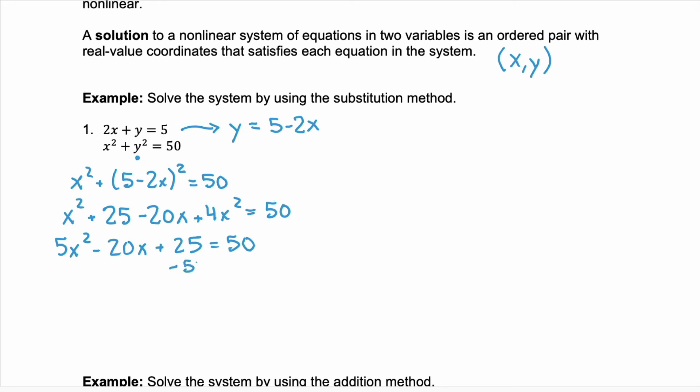Combine all of the like terms on the left-hand side and you have 5x squared minus 20x plus 25 equals 50. Let's subtract 50 from both sides because you're noticing that we have a polynomial. We have 5x squared minus 20x minus 25 equals 0. We can factor out a GCF of 5 and we have 5 times x squared minus 4x minus 5 equals 0.